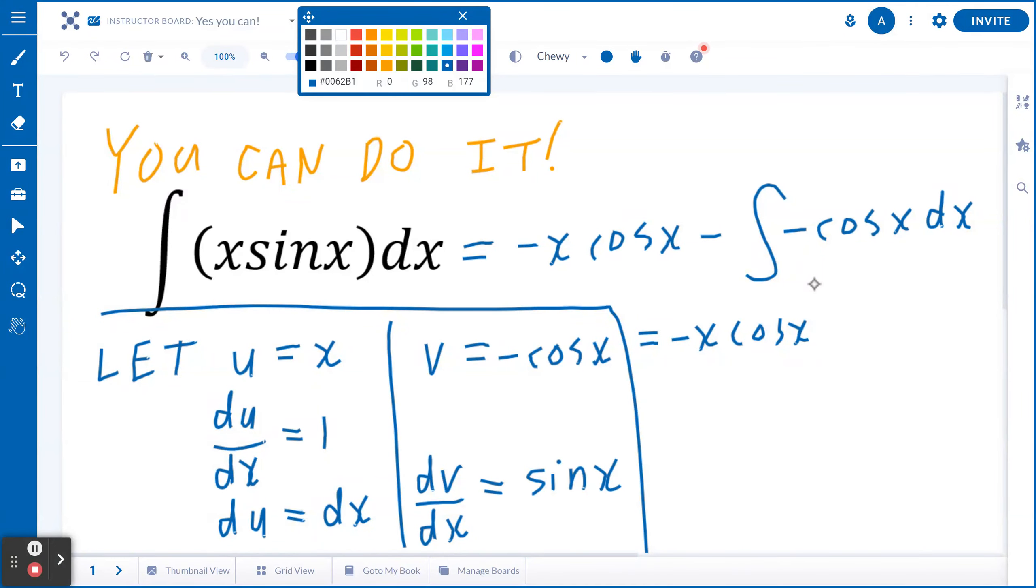And when you find the antiderivative of cosine x, that's going to give you sine x. And of course, negative times negative is positive. So this equals to plus sine x.